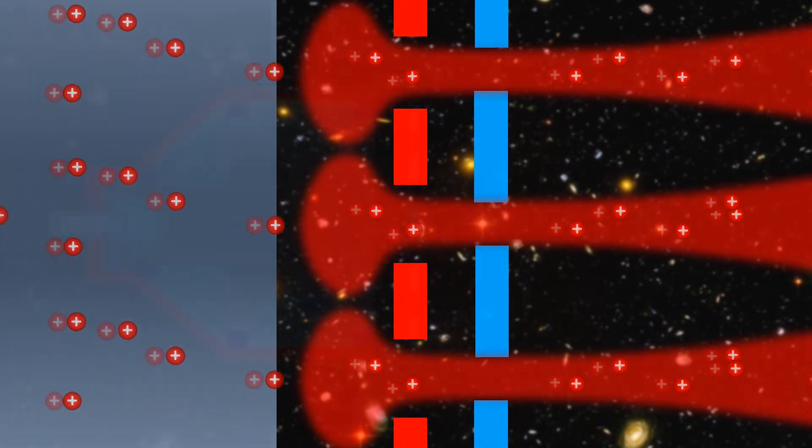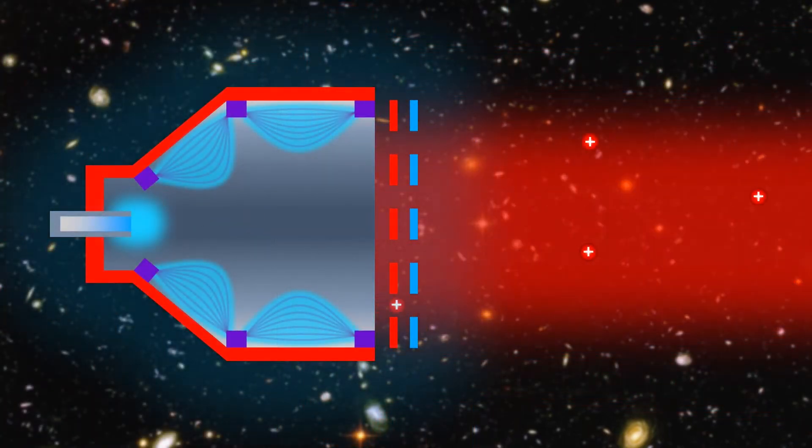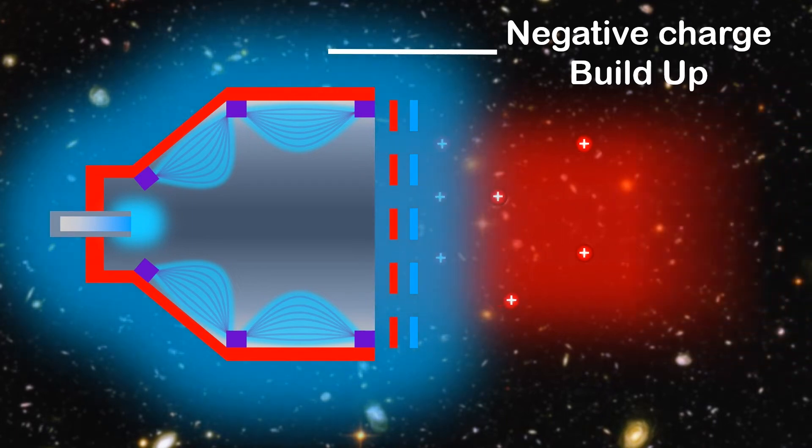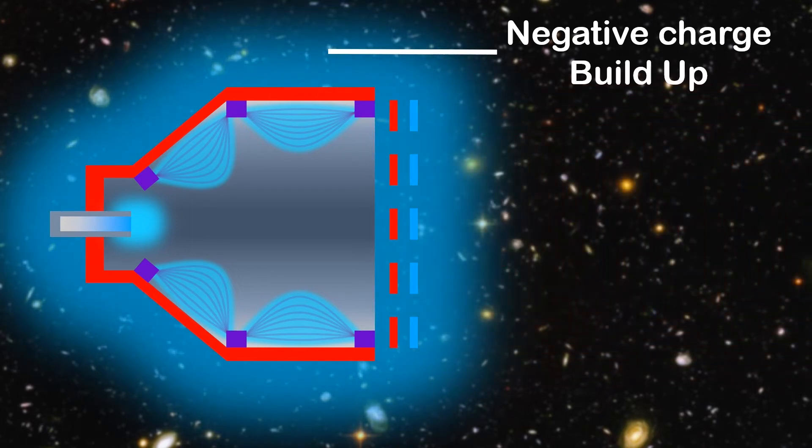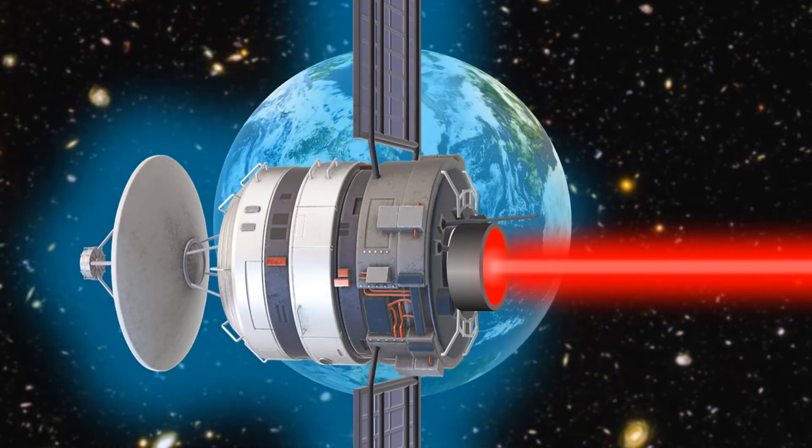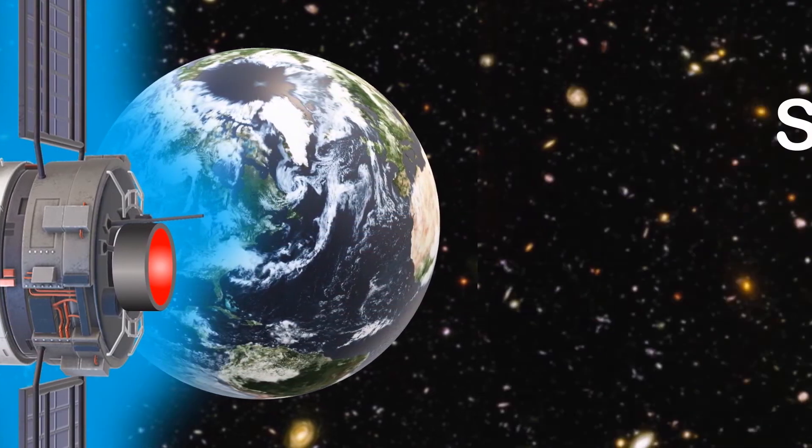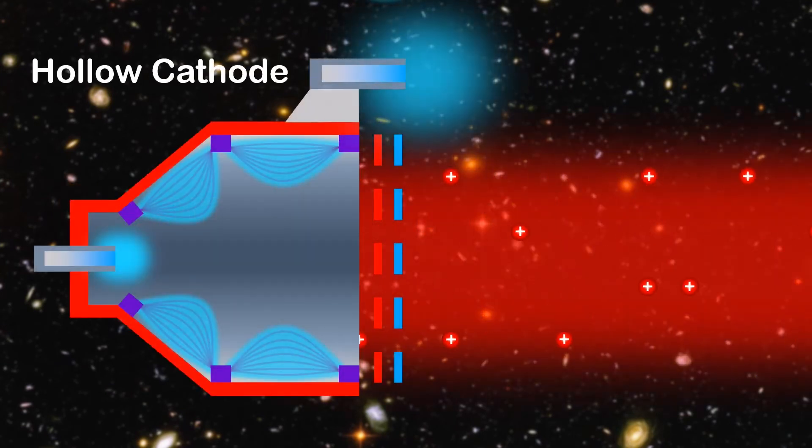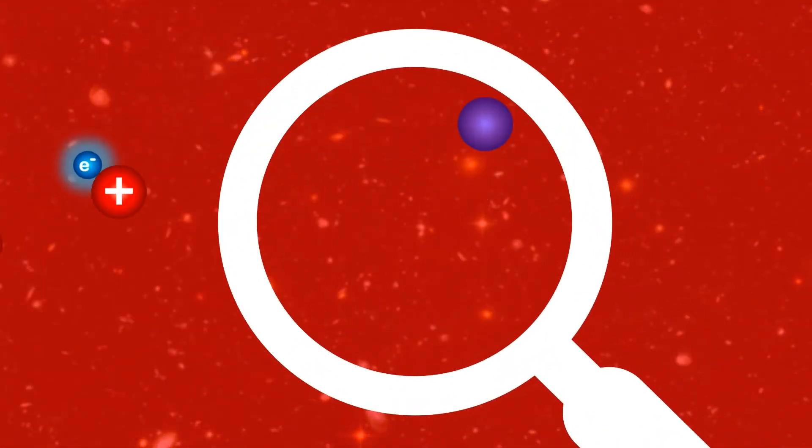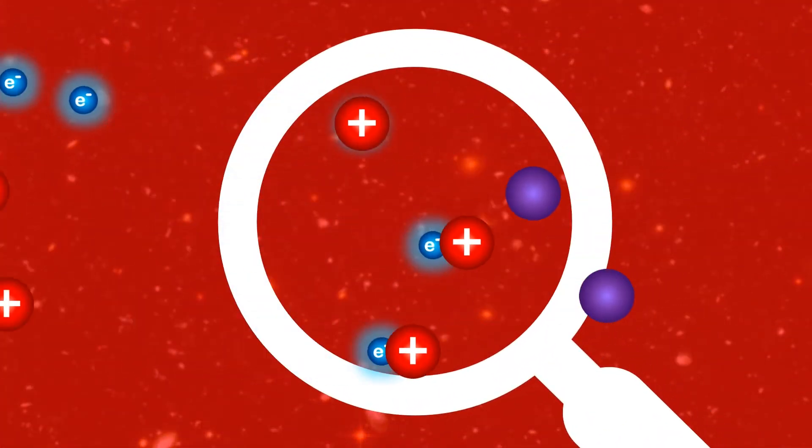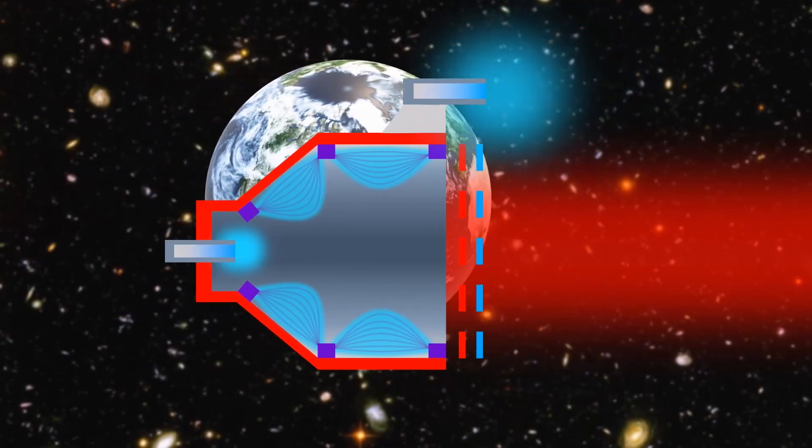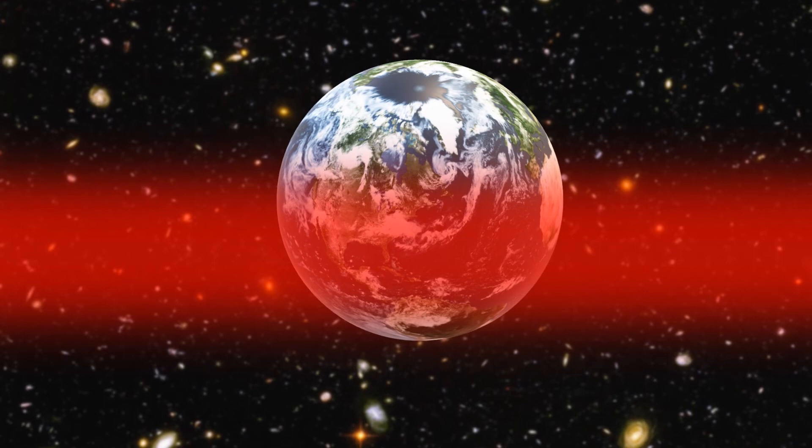But there's one final issue. As positive ions leave, a negative charge builds up on the thruster. Eventually the negative charge pulls the positive ions back until they can't leave at all. And if the ions can't leave, then we have no thrust. The solution is to neutralize the beam. A second hollow cathode fires electrons into the ion beam. The negative electrons then recombine with the positive ions and form back into neutral atoms. This means that overall, no charge is lost from the thruster and charge build up is prevented.